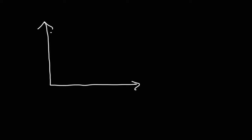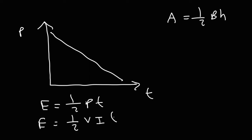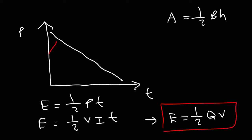In the case of a supercapacitor, the discharge graph looks like a triangle. The area of a triangle is one-half base times height, so the area under the P-T curve is one-half times P times t. Power is voltage times current, and charge is current multiplied by time. So this gives us the energy capacity of a capacitor, which is one-half QV — due to the triangular shape of the graph. That's how you calculate the energy capacity of a battery or capacitor: by finding the area under the P-T curve.